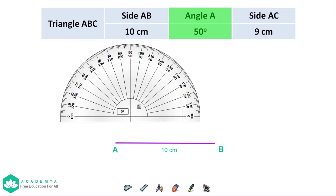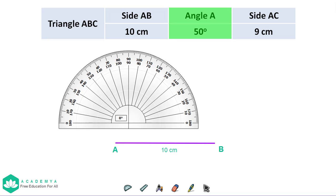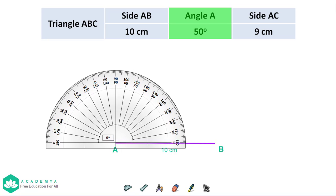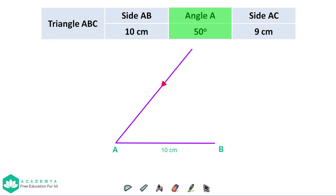Second step, using a protractor, draw angle A 50 degrees. Mark 50 degrees and draw a long line starting from A.